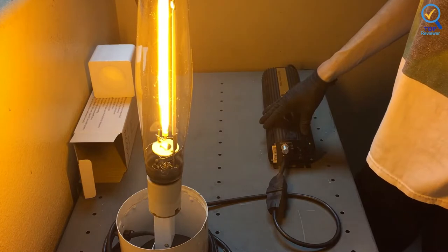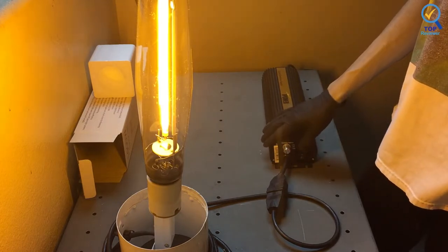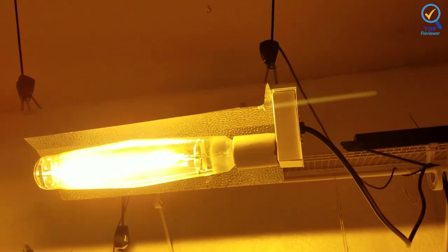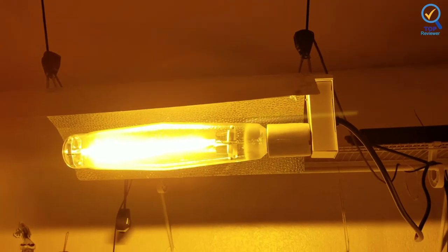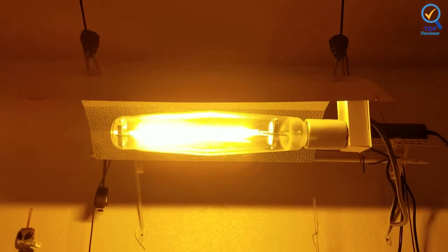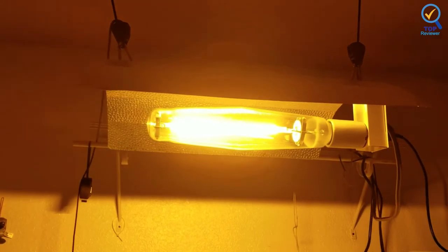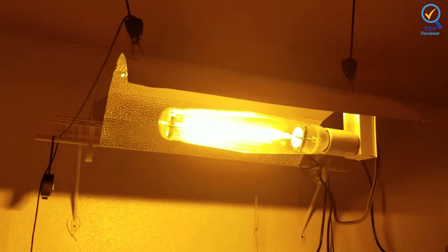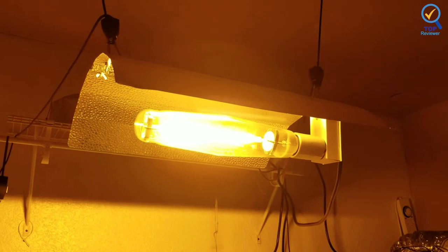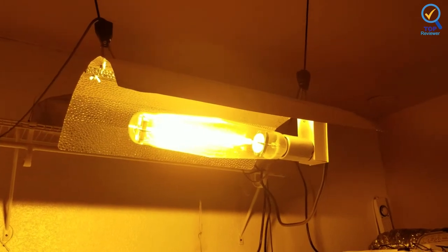The 1000W HPS grow light will cover anywhere from 4x4 to 6x6. It is the most potent HPS grow light around. It comes with two 8-feet ratchet clip hangers that can withstand up to 150 pounds. In addition, a 9-inch reflector ensures extensive area coverage of 4x4 feet.